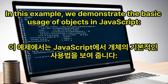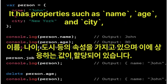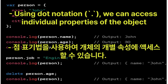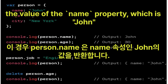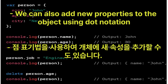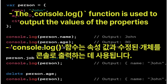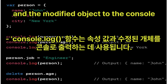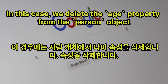In this example, we demonstrate the basic usage of objects in JavaScript. We create an object named person representing a person's information, with properties such as name, age, and city with corresponding values. Using dot notation, we can access individual properties; person.name returns the value of the name property, which is 'John'. We can also add new properties using dot notation; here we add a job property with the value 'engineer'. The console.log function outputs the values of the properties and the modified object to the console. The delete keyword is used to remove a property; we delete the age property from the person object.